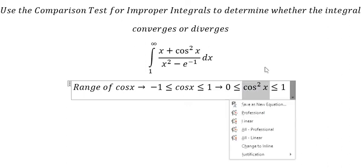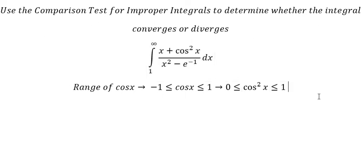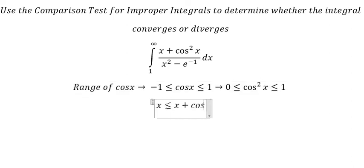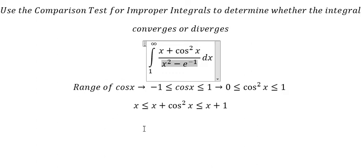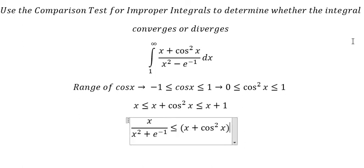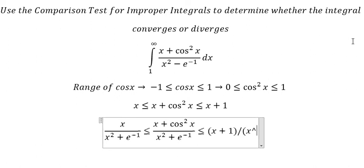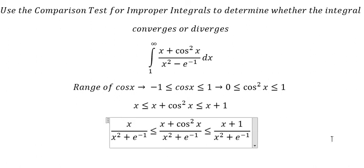Now we put the expression with minus e to the power of negative one for both sides, because we have zero, so we put the inequality for both sides. Next, we divide by this expression, and then I will put the integration for both sides.